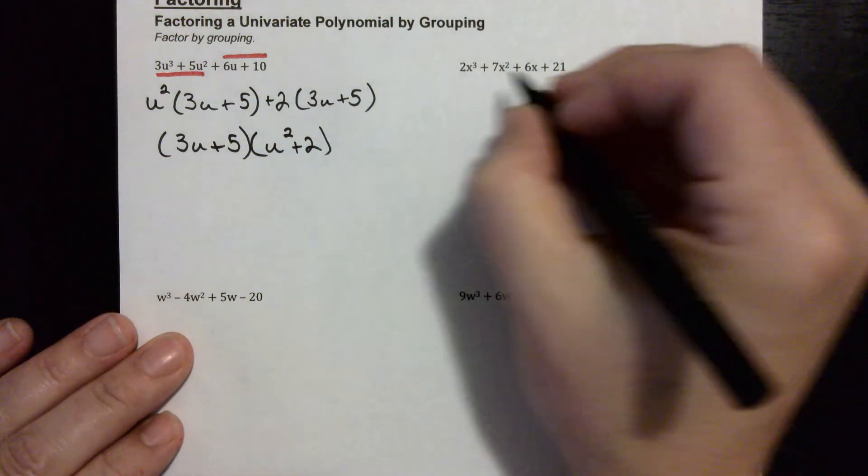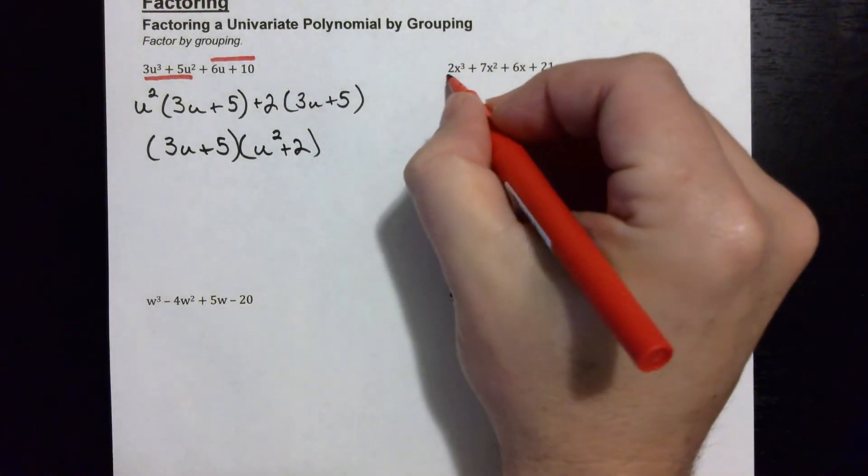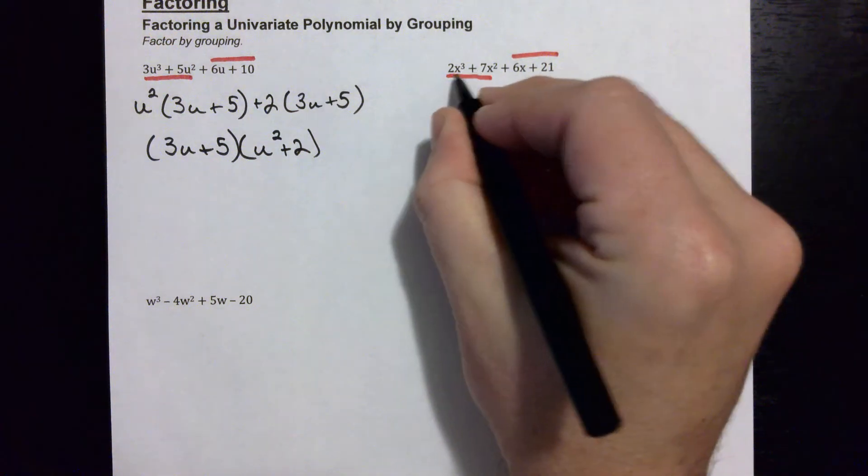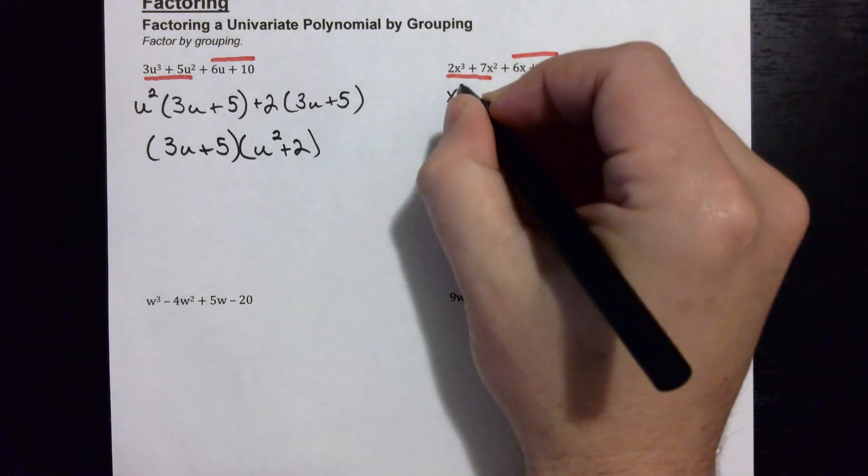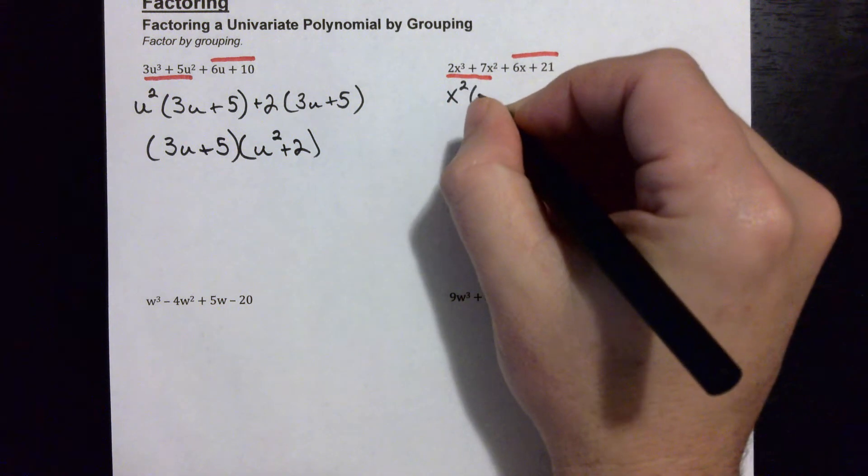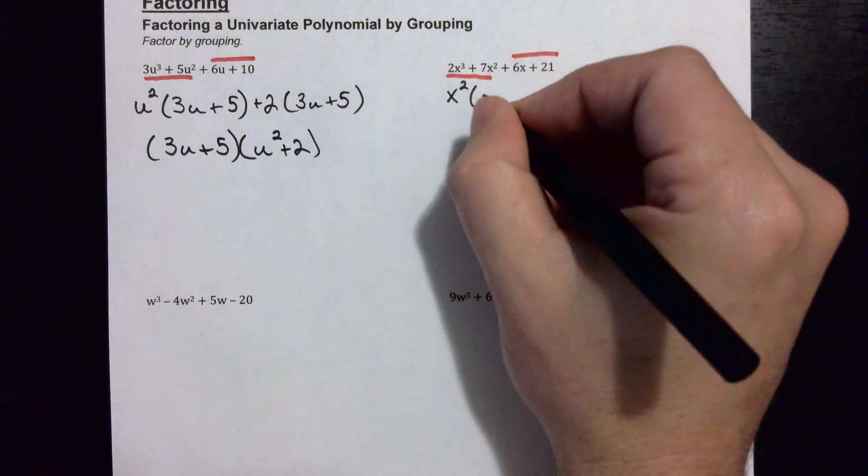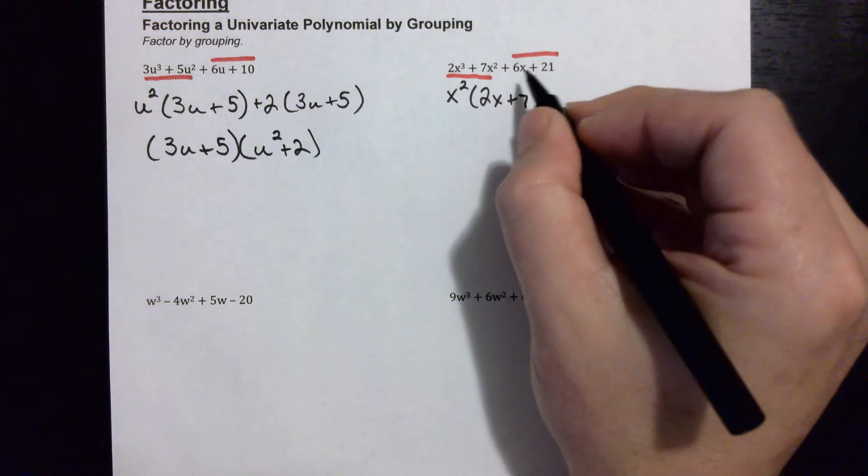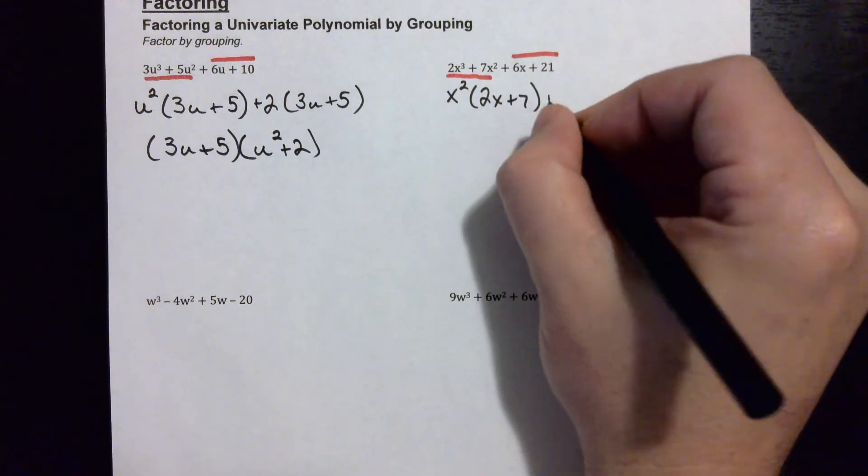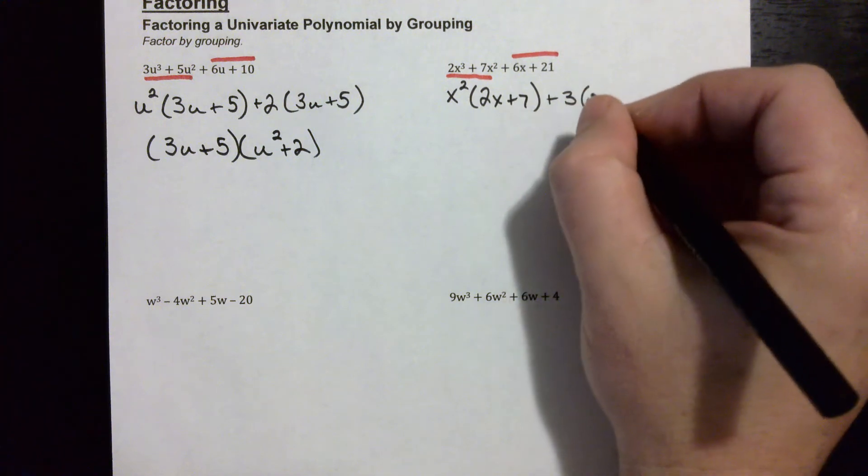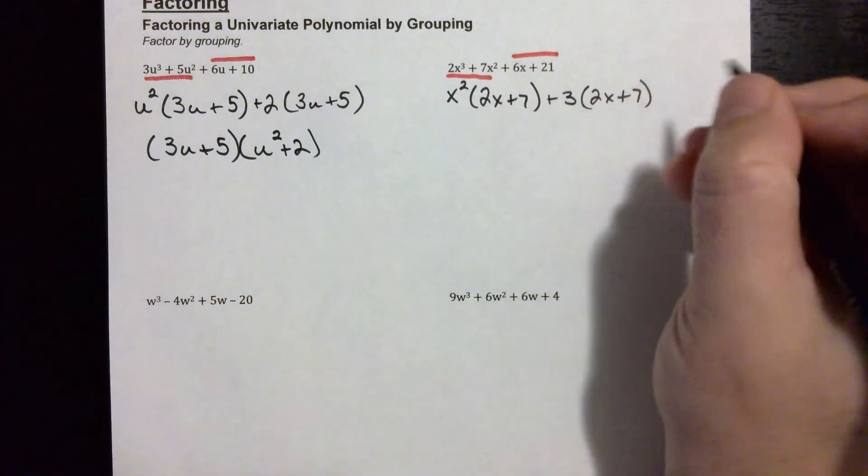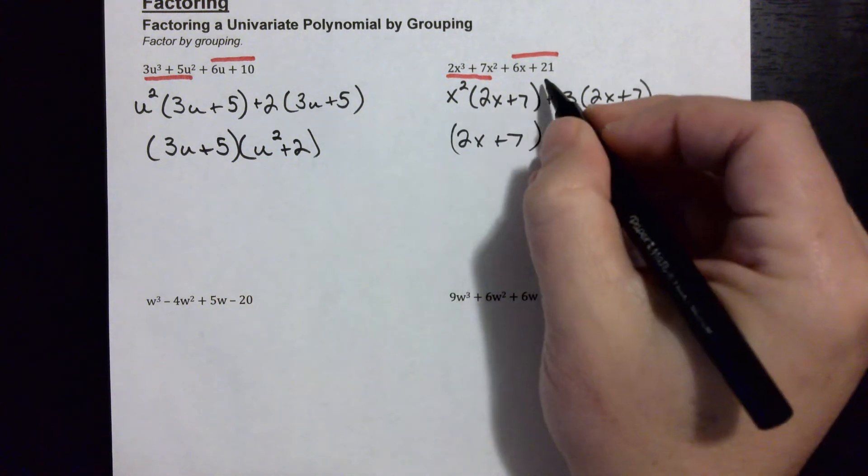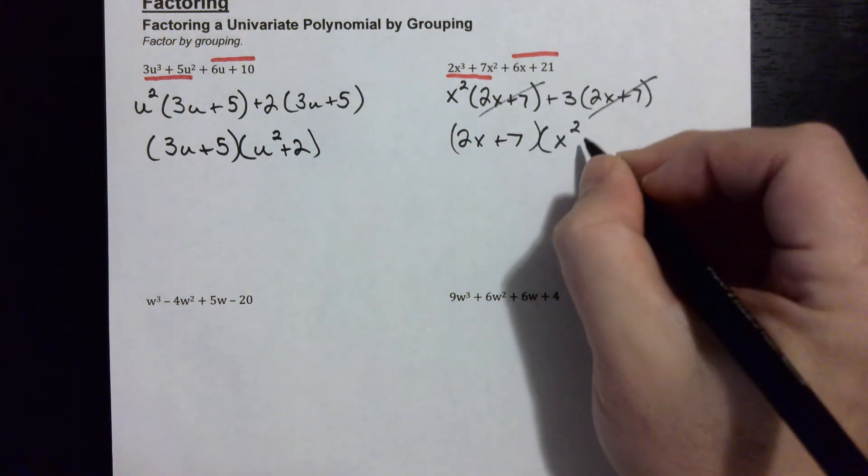Let's take a look at this one. We will factor the first two terms and then the second two terms. So that gives us, what can we take out of here? There's no number, two and seven have nothing in common, but we can take an x squared out, and that will leave two x in this one if I divide out the x squared and plus seven. And here, I can't take an x out because there's no x, but I can take a three out. That's the biggest thing that will go into these two numbers. So plus three, and that'll leave two x plus seven. Now just like last time, since I have both of the two x plus sevens, I'll put that out front. So that's gone. What's left? x squared plus three.